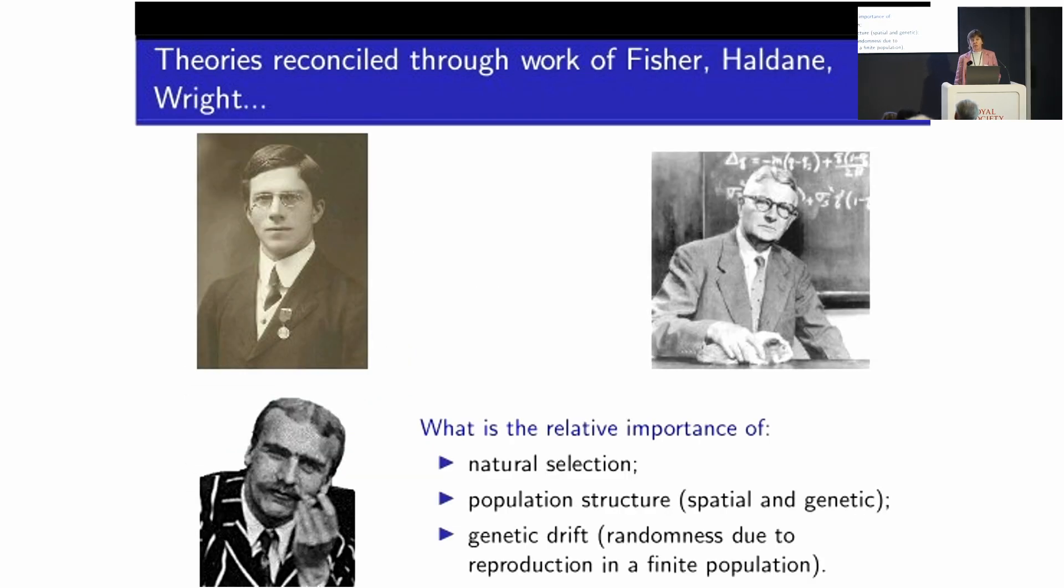But united they were, and they were united largely actually through the theory of mathematics. And the three people who we usually associate with this modern evolutionary synthesis are JBS Haldane on the bottom left, R.A. Fisher, famous statistician on the top left, and Sewell Wright, a very famous American evolutionary geneticist on the top right. Now Wright and Fisher hated one another, which is why there's a big white space in between them on this slide. So although they would certainly have all agreed that the theories of Mendel and Darwin were compatible, what they would have disagreed over is the answer to this question, which is what's the relative importance of the different forces of evolution.